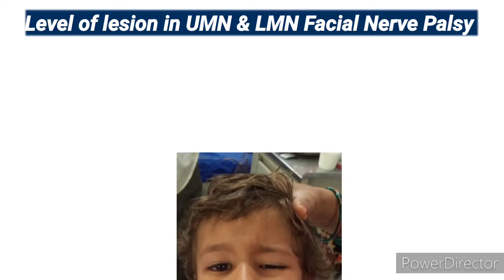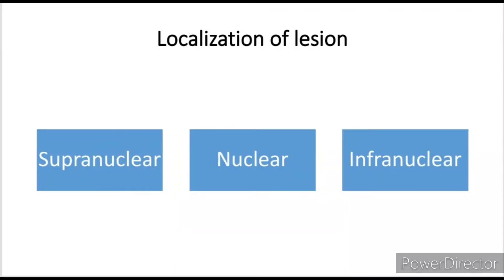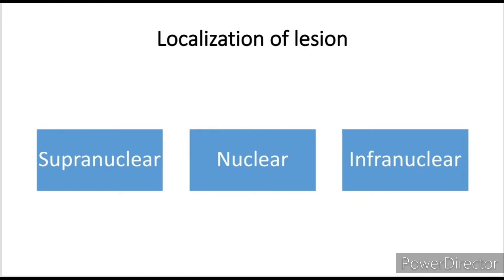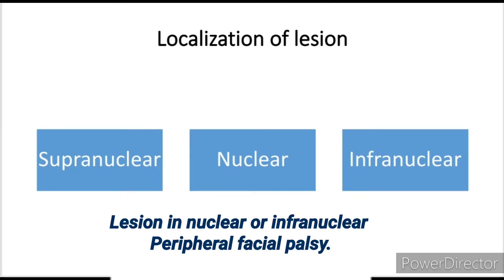We can localize the anatomical level of the lesion by characteristic clinical features and associated dysfunctions. According to UMN or LMN findings, we can differentiate whether the lesion is supranuclear or nuclear/infranuclear. A lesion in the cortex, corticobulbar tract, corona radiata, internal capsule, cerebral peduncle, or upper pons leads to central facial nerve palsy of UMN type. A nuclear or infranuclear lesion leads to peripheral facial nerve palsy of LMN type.